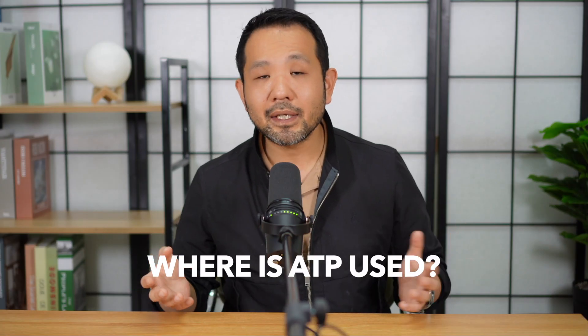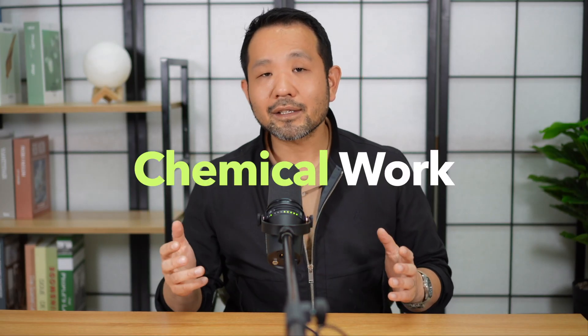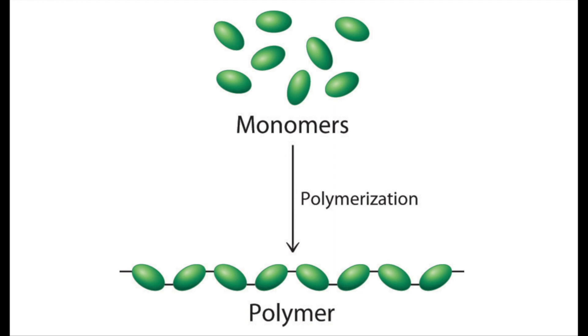Now we know where ATP is going to be used. Cells perform three major types of work: chemical work, transport work, and mechanical work. Chemical work is any time you use energy to build more complex materials from simpler constituents. In Unit 1 we discussed polymerization, dehydration synthesis, and condensation reactions — how monomers become polymers. When monomers become polymers, we're decreasing entropy and creating complexity, so it's not free. ATP or its derivatives are used to create polymers from monomers — for example, creating polypeptides, replicating DNA, or creating RNA during gene expression.